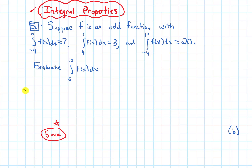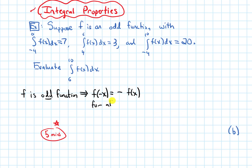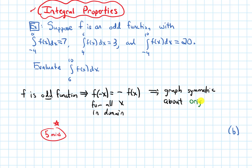First I want to recall what it means for f to be an odd function. So f is an odd function — the definition is that f of negative x equals negative f of x. This is true for all values of x in the domain. And graphically, that means that our graph is going to be symmetric about the origin.